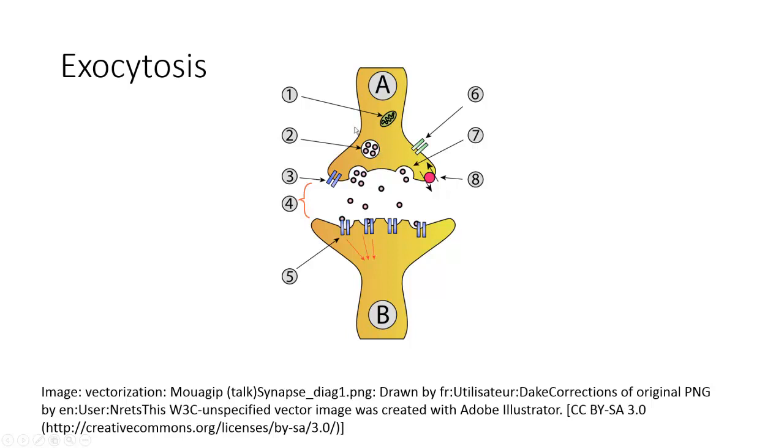In this case the vesicle is full of neurotransmitter in this presynaptic neuron. This is a type of cell-cell junction called a synapse, which we'll get into more later. This vesicle full of neurotransmitter is going to be transported to the plasma membrane where it will fuse with the membrane and release its contents into the extracellular space, where it can go to the next cell down the line and initiate some sort of response from that downstream cell.